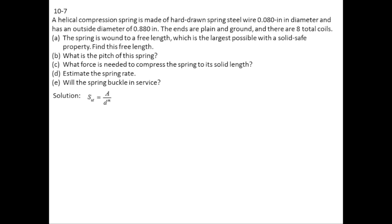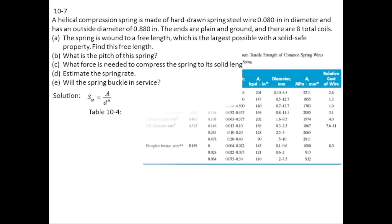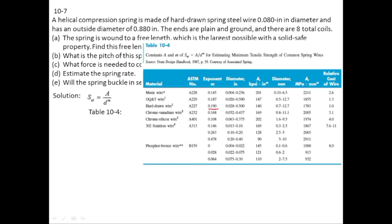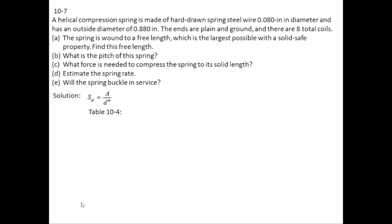As the ultimate tensile strength is equal to A divided by d to the power m, m values are taken from table 10.4. In the table for hard drawn wire m is equal to 0.19 and A is equal to 140 kpsi. Putting these values in the formula yields 226.2 kpsi.